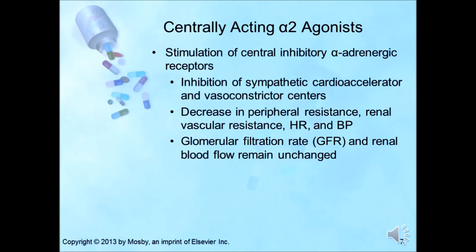Centrally acting alpha-2 agonists, such as clonidine and methyldopa, act through stimulation of central inhibitory alpha-adrenergic receptors. They inhibit sympathetic cardioaccelerator and vasoconstrictor centers. Stimulation of alpha-adrenergic receptors in the brain stem results in reduced sympathetic outflow from the central nervous system, causing a decrease in peripheral resistance, vascular resistance in the renal system, heart rate, and blood pressure. Renal blood flow and glomerular filtration rate remain essentially unchanged.